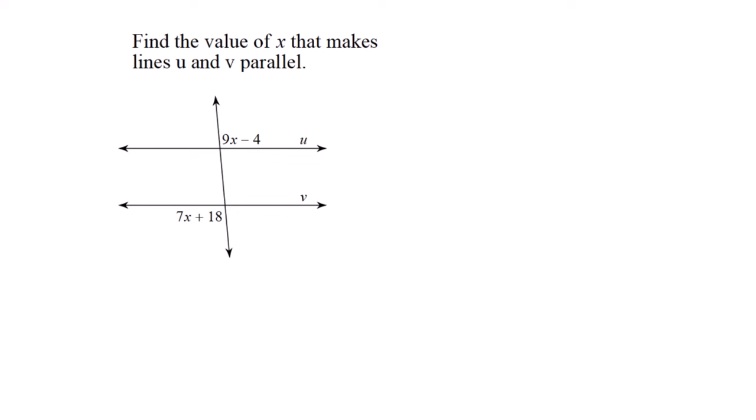Same type of problem. Find x that makes the lines parallel. We have 9x minus 4 and 7x plus 18. These are alternate exterior angles. If you remember the math relationships, you'll be fine. Almost all angle pairs are equal except same side interior. Alternate exterior angles are congruent.